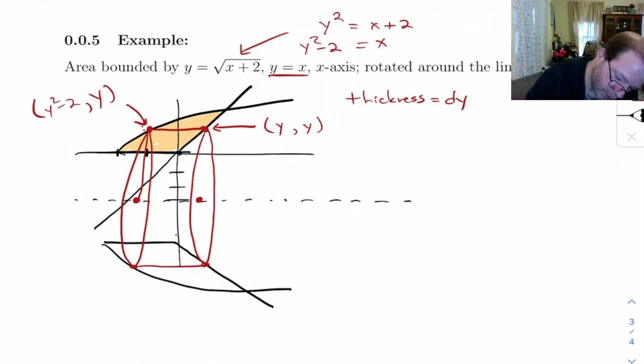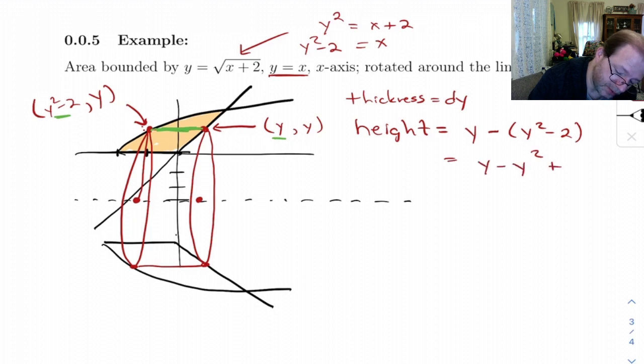So the height of this thing, that is this length here, it's the difference in the two x-coordinates. So the height is going to be y minus y-squared minus 2, or y minus y-squared plus 2.